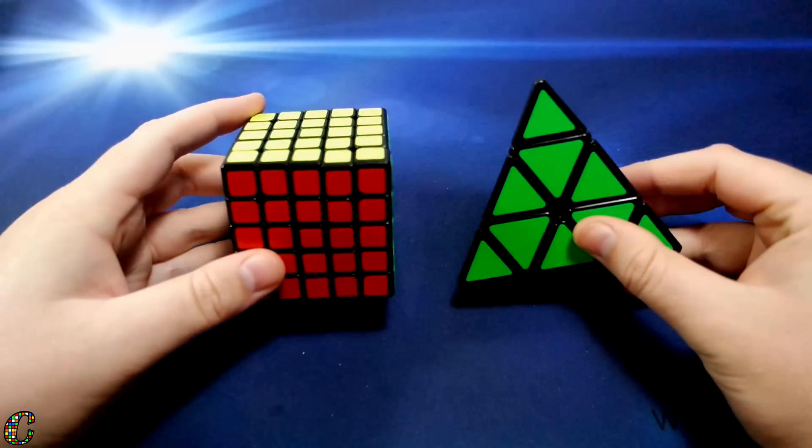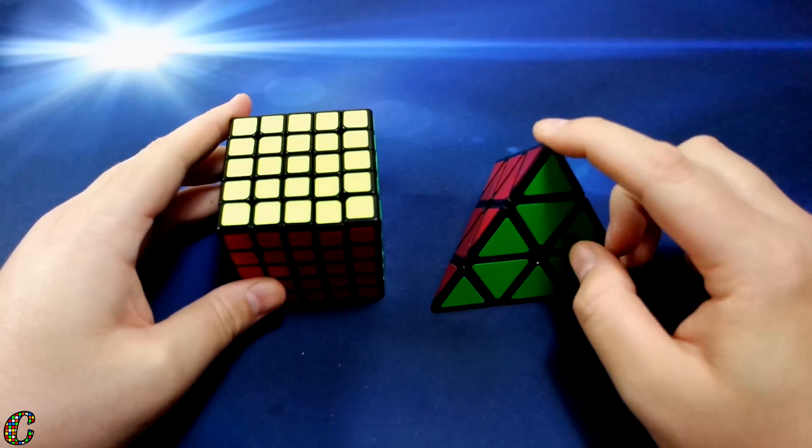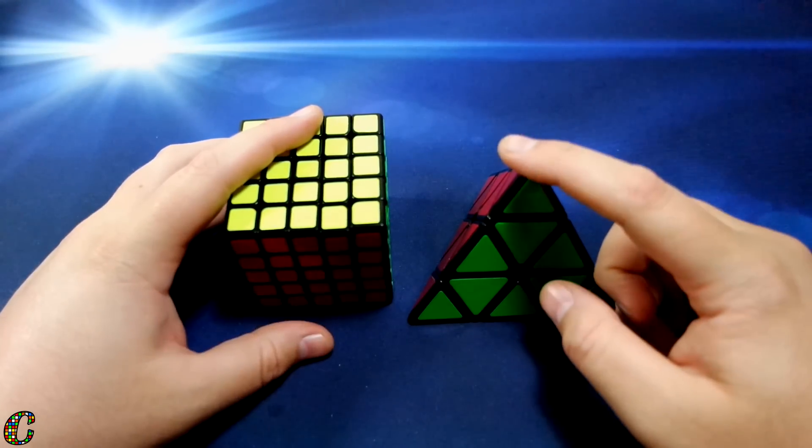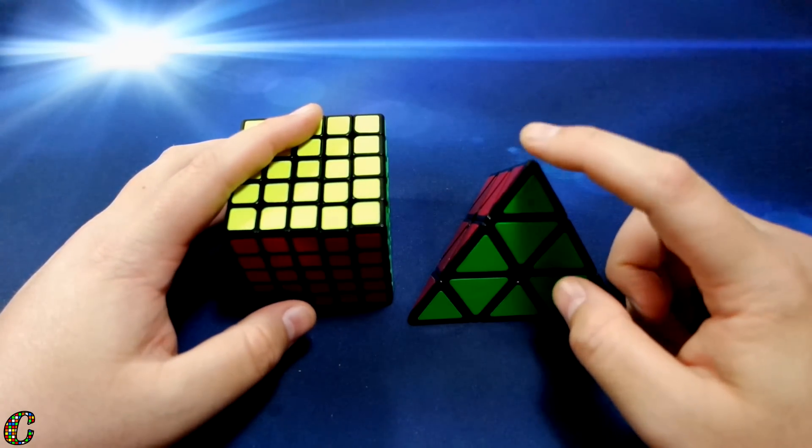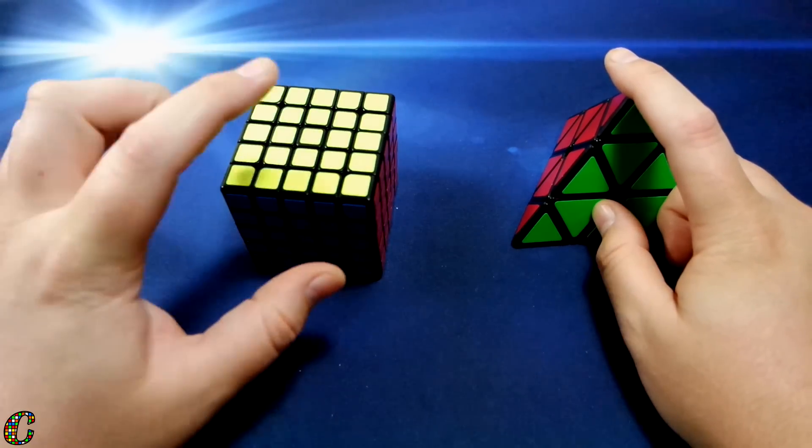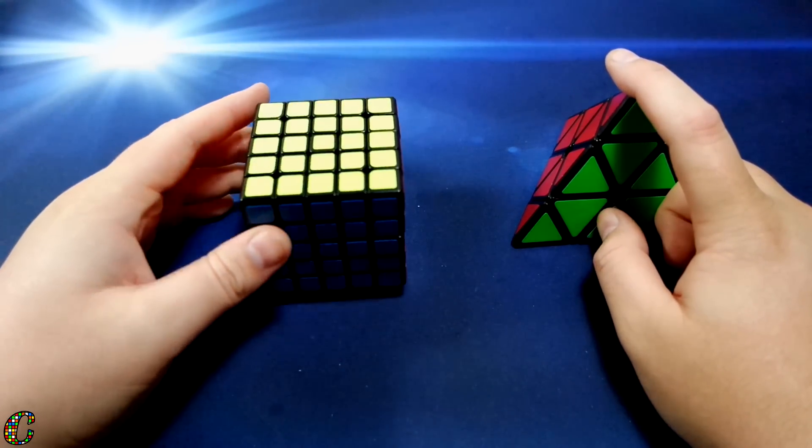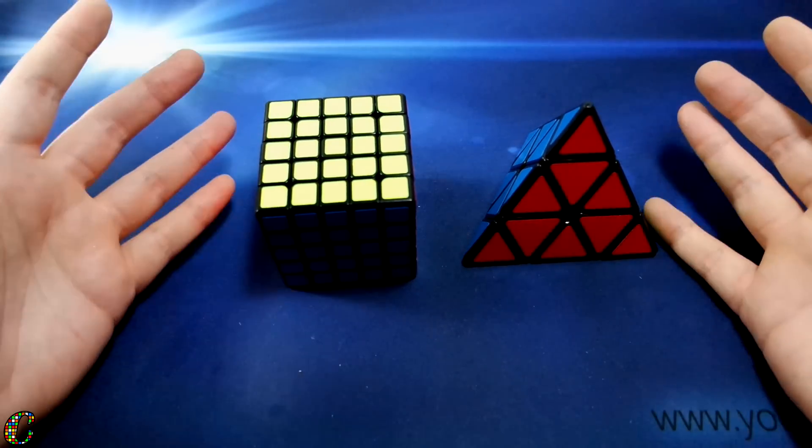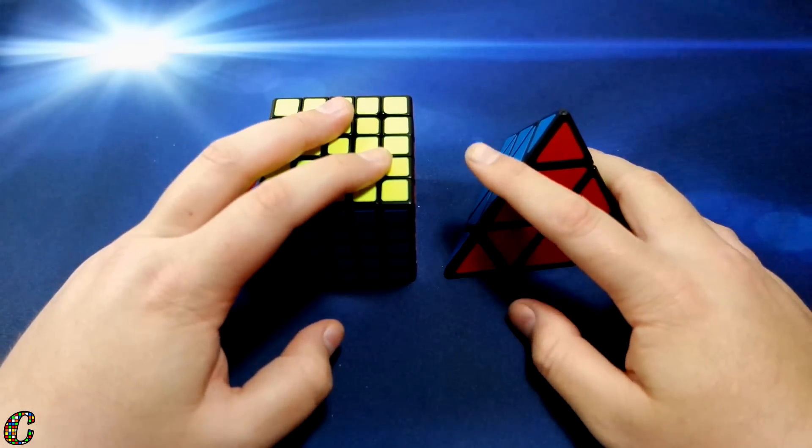So final verdicts on these two puzzles: Chi Yi Pyraminx definitely good, not the best out of the box, but better than the Diane, probably almost as good as the Moyu and broken in Shang Shao. But with this puzzle, the Yuxin 5x5, this thing's amazing. I can't imagine it getting much better with lubing and tensioning and breaking in. This will probably break in a lot better, but these are both super super nice cubes.